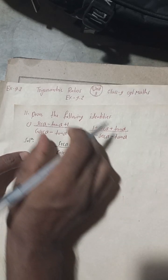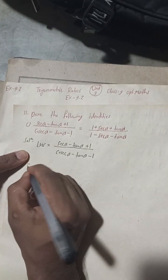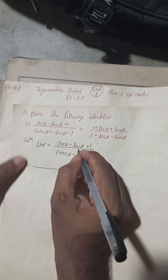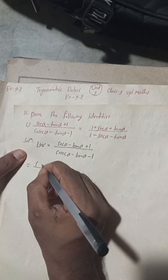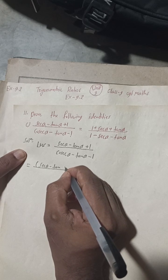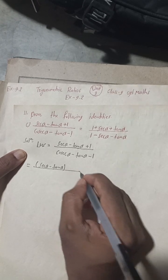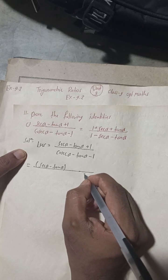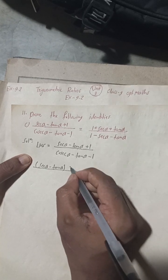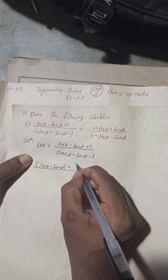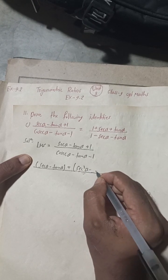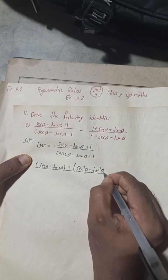LHS — this part I have taken here. Now we can write sec α minus tan α as it is in bracket, and then we can write plus sec²α minus tan²α.